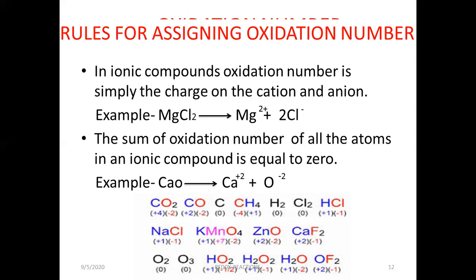The second rule says that the sum of the oxidation numbers of all atoms in an ionic compound is equal to zero, or equal to the charge on the ion. For example, in calcium oxide, the charge on calcium is plus 2 and on oxygen it is minus 2, so the total comes to zero. Similarly, in MgCl2, the total charge also comes to zero.